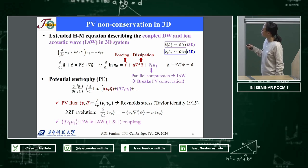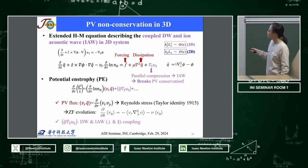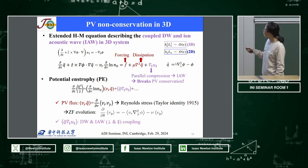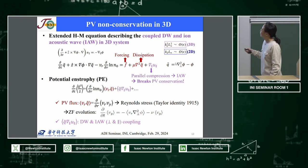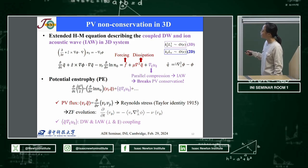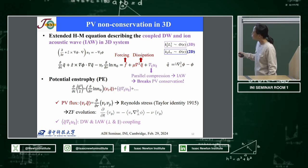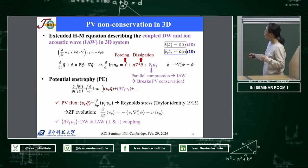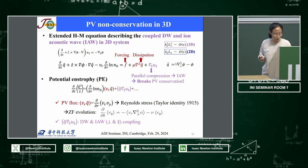Now we can see PV conservation is broken. From the potential vorticity equation we can also get the zonal flow equation, modified with one new term. On the right-hand side we have the PV flux already present in the 2D system, which is related to Reynolds stress and drives zonal flow. But the new term is the coupling between the drift wave in the perpendicular direction and the ion-acoustic wave in the parallel direction. This term will also drive the zonal flow.